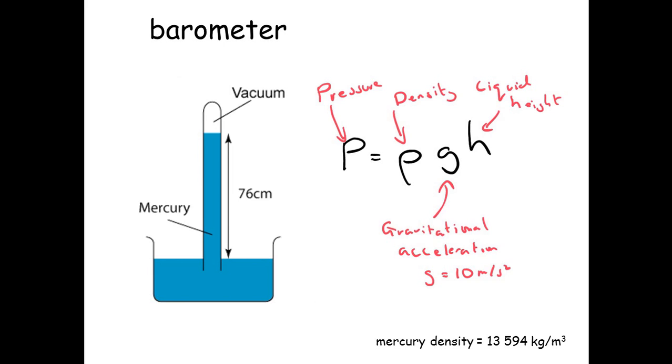Now, the dish of mercury at the bottom is open to the atmosphere, so the pressure acting down from the atmosphere is equal to the pressure of the mercury going up. And we can work out what the pressure of the mercury is using the equation here.